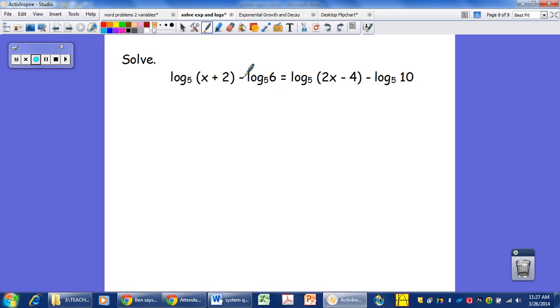Okay, our last one, it looks like we have to condense these ones and we will have to condense these ones as well. So we still have division or subtraction. Subtraction becomes division. Subtraction becomes division. So this is the log base 5 of x plus 2 over 6. Sorry, that's 2. Equals log base 5 of 2x minus 4 over 10.